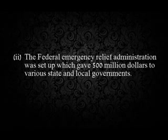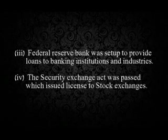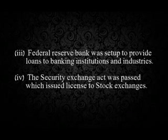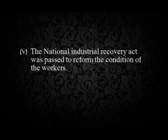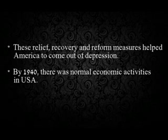The Federal Emergency Relief Administration was set up which gave $500 million to various state and local governments. The Federal Reserve Bank was set up to provide loans to banking institutions and industries. The Security Exchange Act was passed which issued a license to stock exchanges. The National Industrial Recovery Act was passed to reform the condition of the workers. The Agriculture Adjustment Act was passed to provide compensation to farmers who curtailed agriculture production. These relief, recovery, and reform measures helped America to come out of depression. By 1940, there were normal economic activities in the USA.